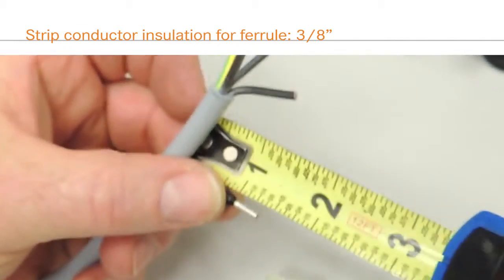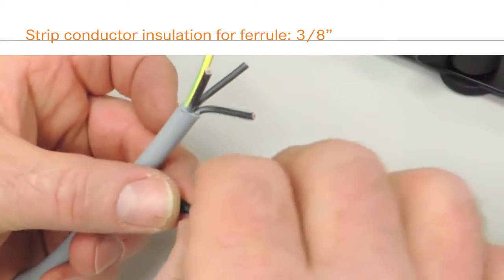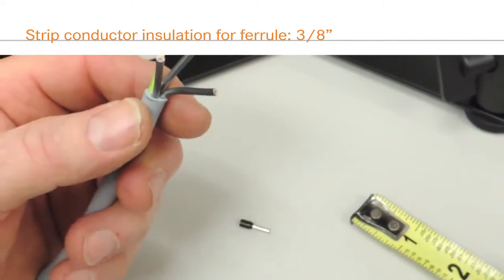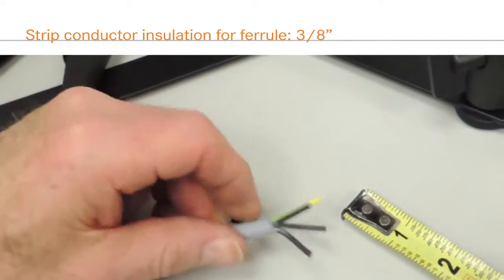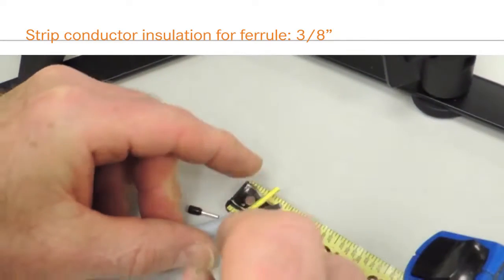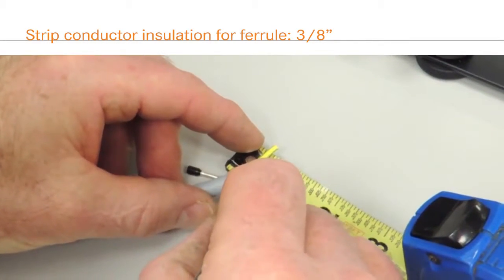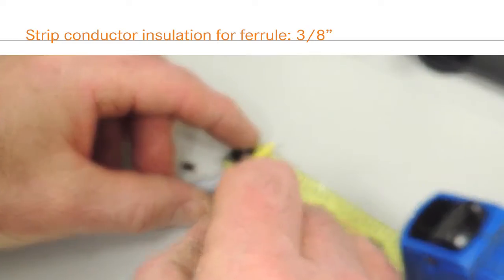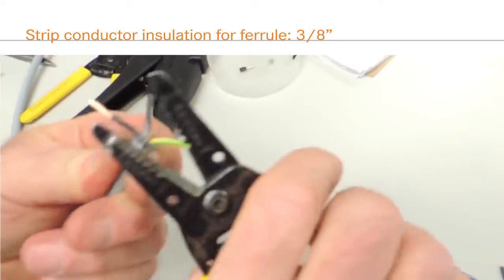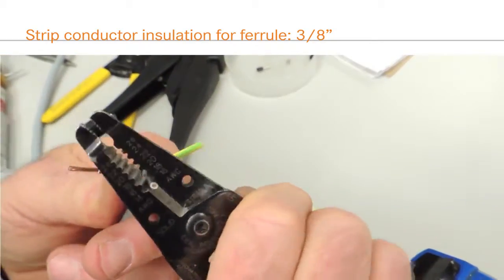Next, the individual conductors need to be stripped to accommodate the wire ferrule. Measure the length of the ferrule to determine how much of the insulation to strip. Three-eighths of an inch is a common stripping length for contact termination. After marking the conductors, use a wire stripper to remove the insulation.